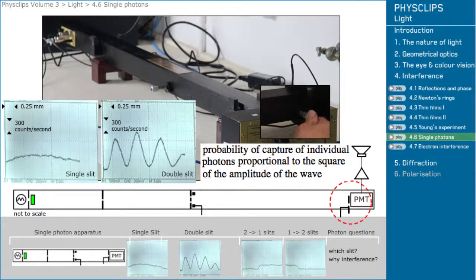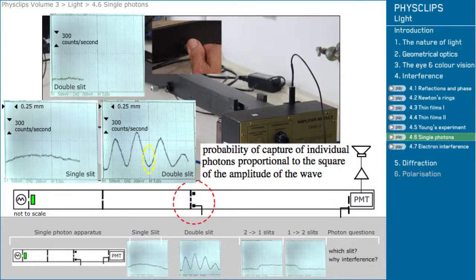Let's put the detector at a minimum. Next, we'll close one slit so that the interference pattern will disappear.